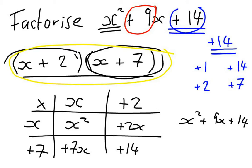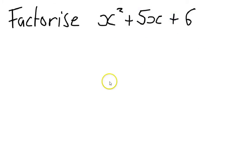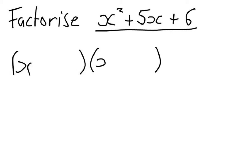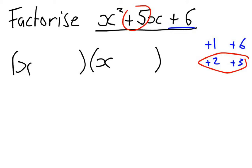Now I'll give you an example to try. Pause the video and have a go at factorising x squared plus 5x plus 6. For the answer: we put in two brackets starting with x and x to get x squared. We look for two factors of plus 6 — positive 1 and positive 6, or plus 2 and plus 3. We need the pair that adds to give plus 5, which is plus 2 and plus 3. So the answer is x plus 2 times x plus 3. Note it doesn't matter which order you write the brackets.